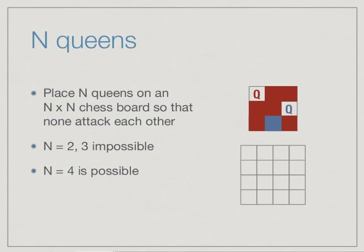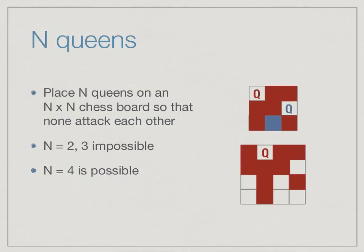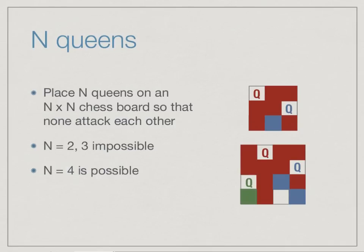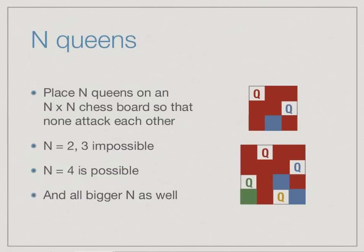For n=4, a solution does exist. We should not start at the corner — if we put the queen in the second column, we find an empty slot at the end of the second row, then a slot in the third row, and the fourth queen completes a symmetric off-diagonal pattern where none of the queens attack each other. It turns out that once n ≥ 4, there is always a solution possible. Our task is to find such a solution.